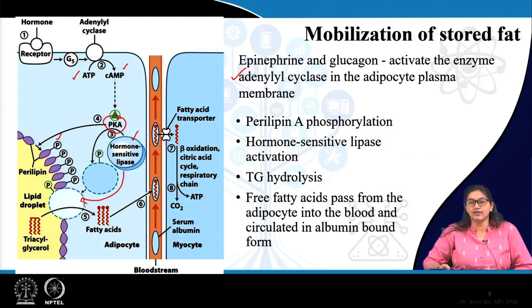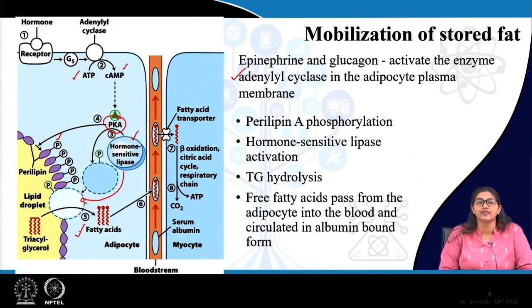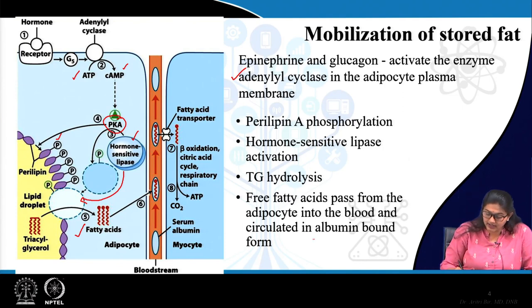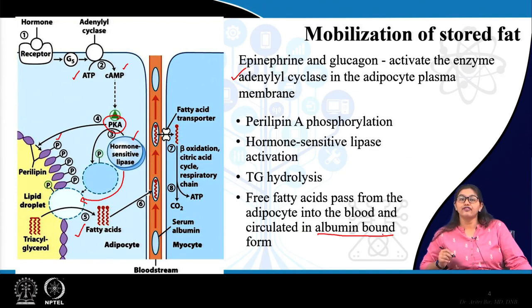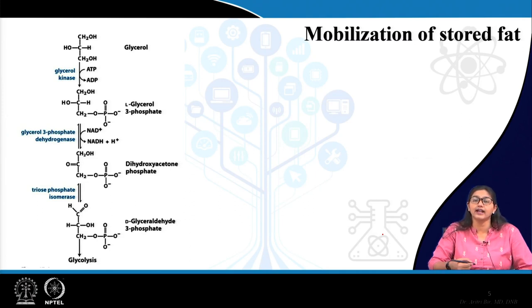When hormone-sensitive lipase is activated, there is release of fatty acid and glycerol from triacylglycerol. These fatty acids from adipocytes enter the blood and are circulated in albumin-bound form. Free fatty acids are circulated through albumin-bound form, then enter oxidation and produce energy.